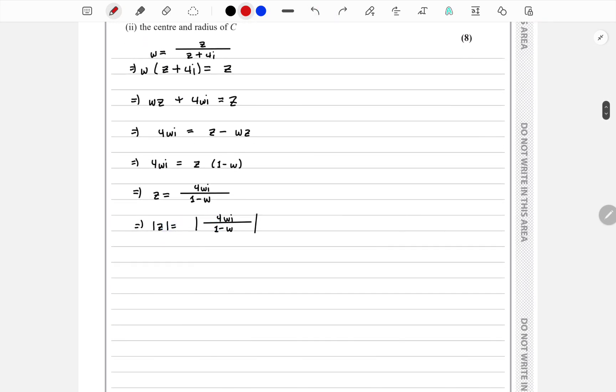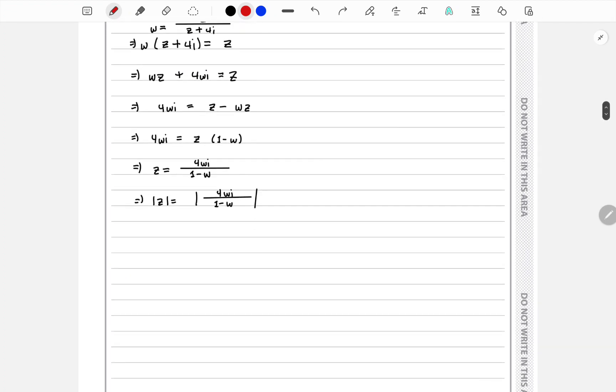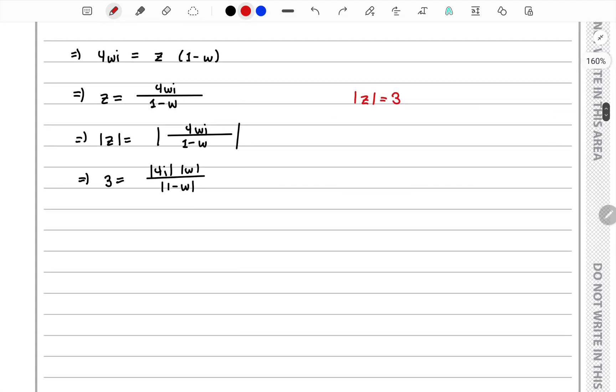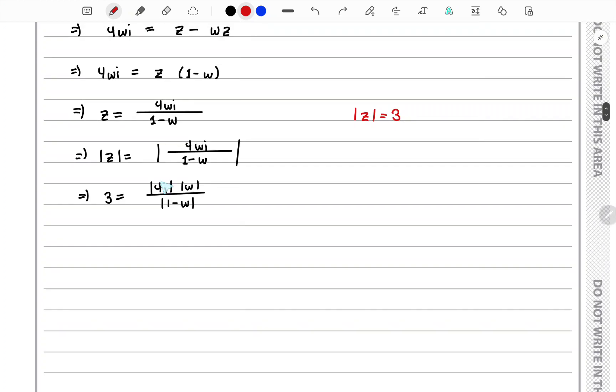If we take the modulus on both sides, we can apply modulus of Z equals to 3 and set this equals to 3 also. The 4i in the modulus would be 4, so we can take it out and write it as 4.